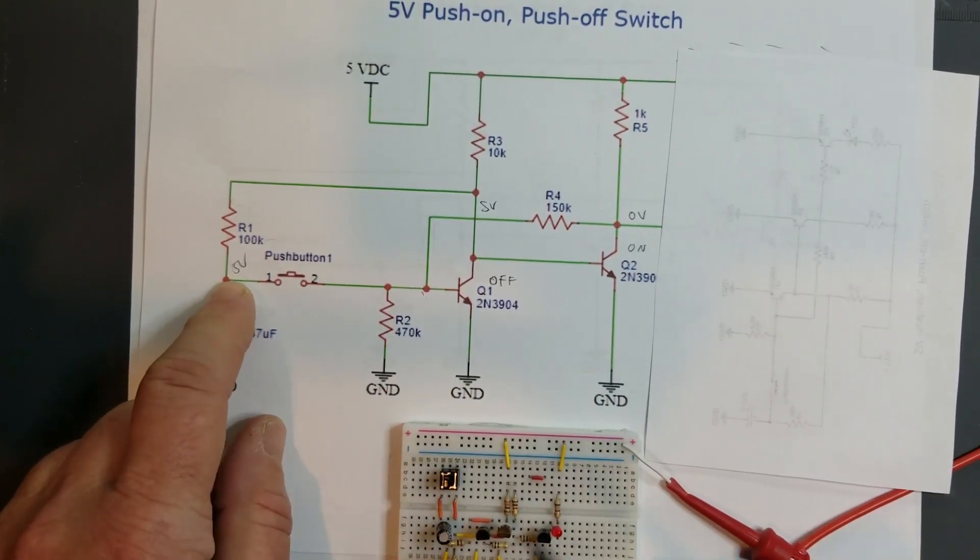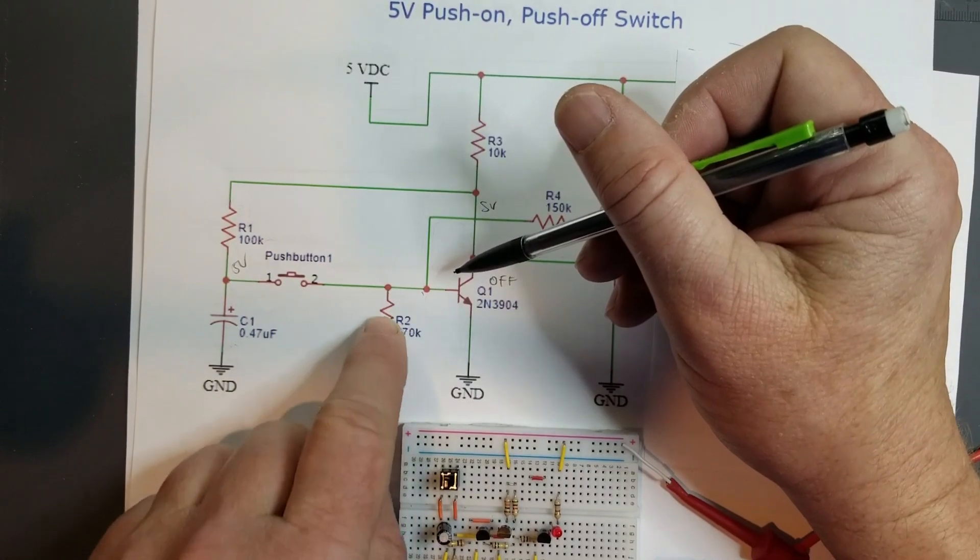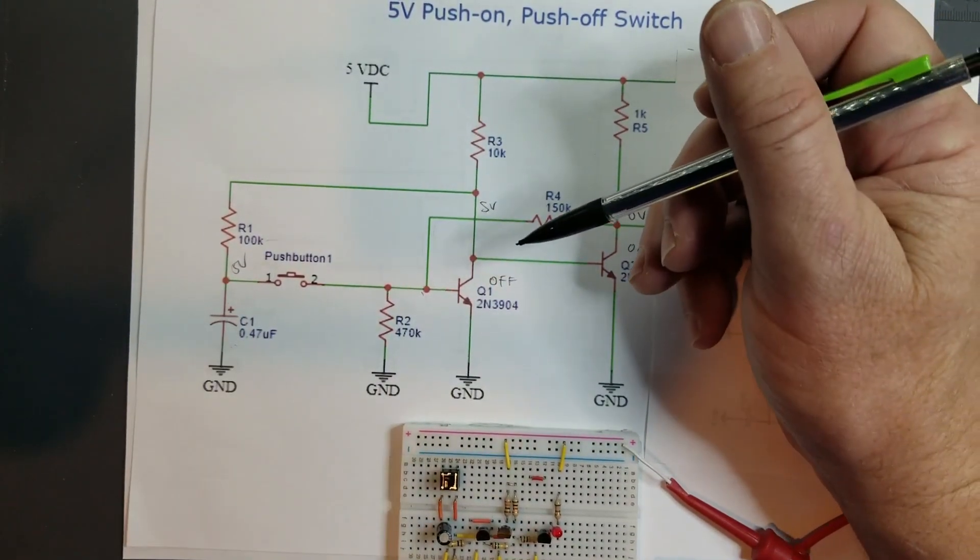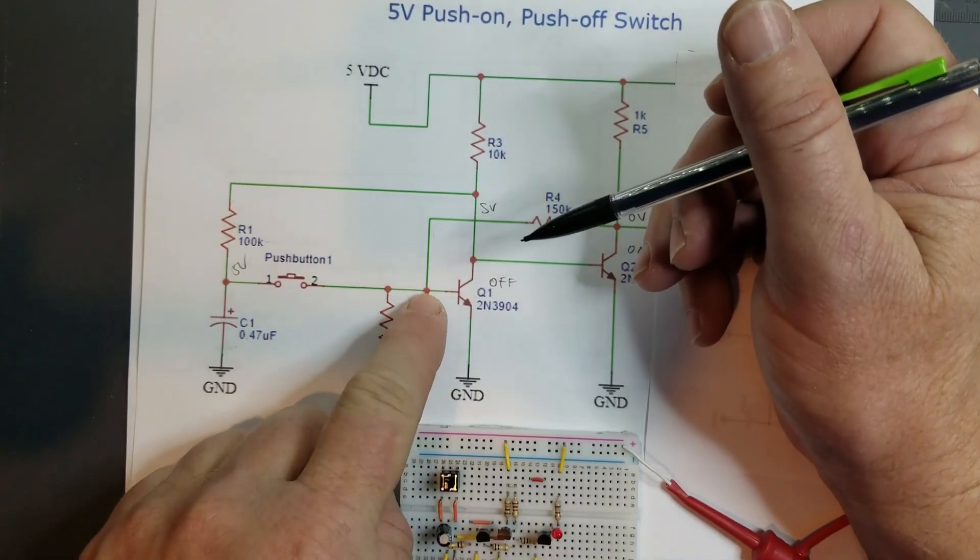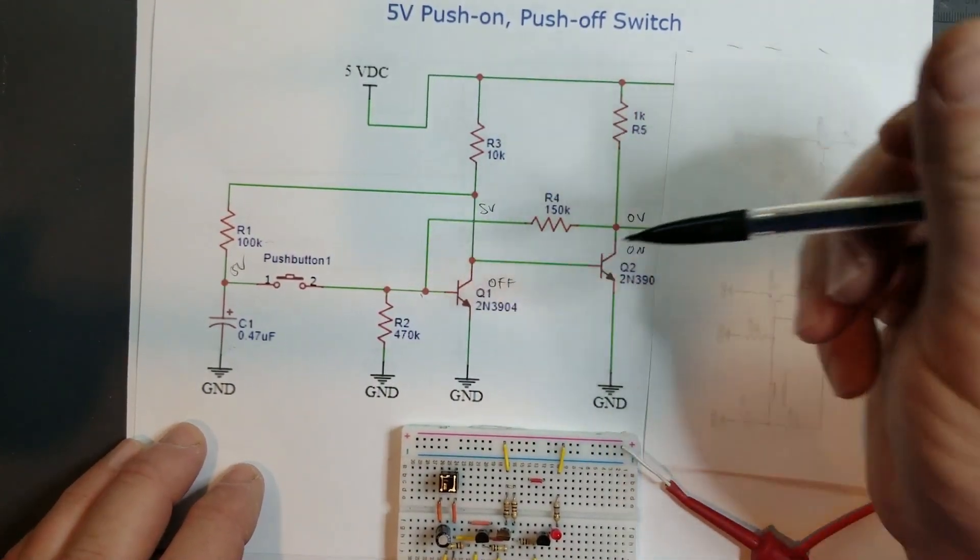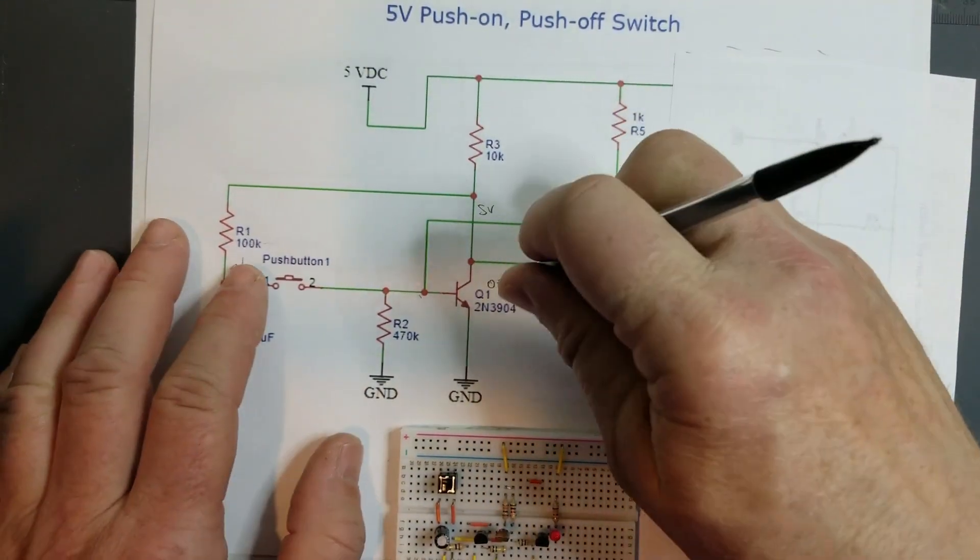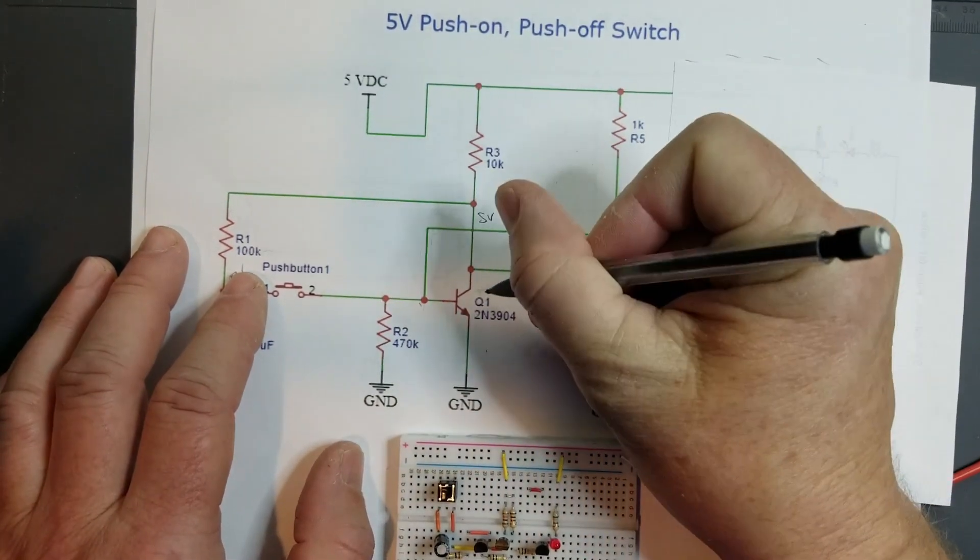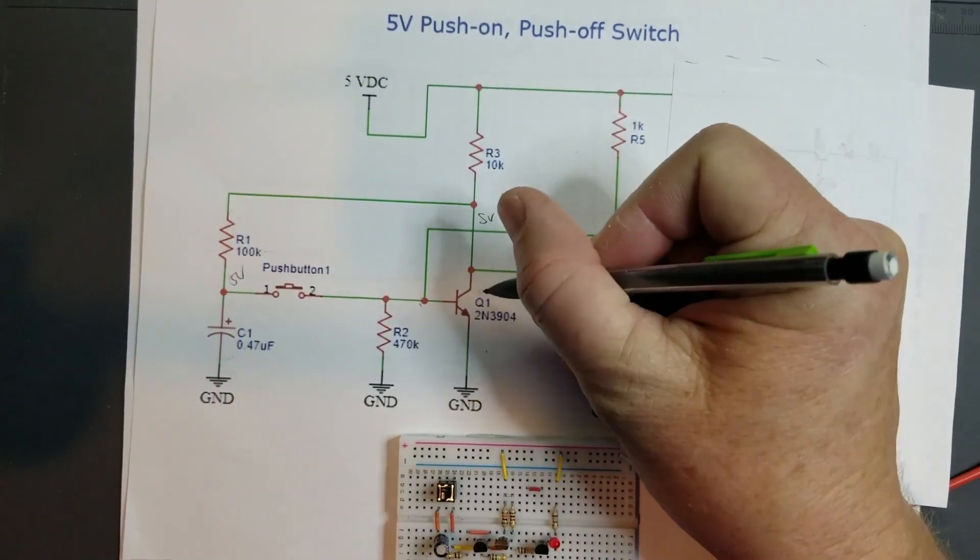Okay, so that's our initial state. Now when you go to push the button, what happens is that 5 volts—since you cannot discharge a capacitor instantaneously—5 volts is going to try to appear right here, so that's going to turn this transistor on. It's going to bias this transistor so that it's momentarily going to be on.